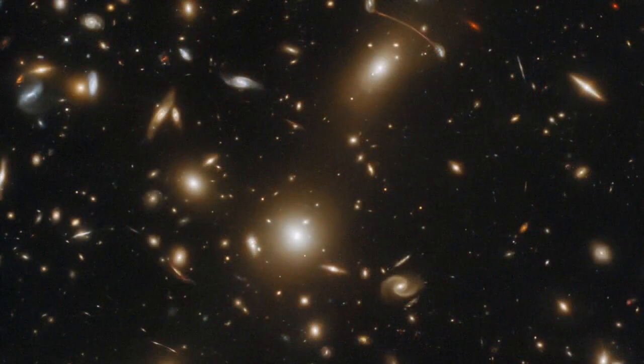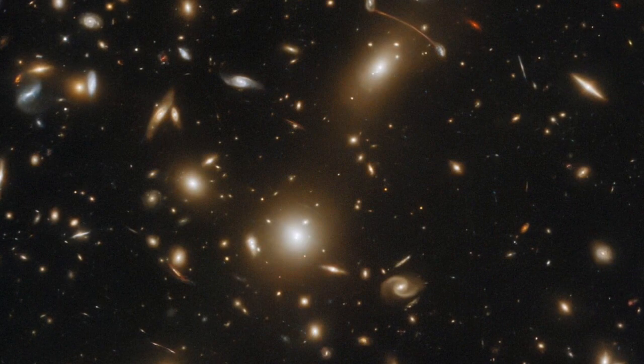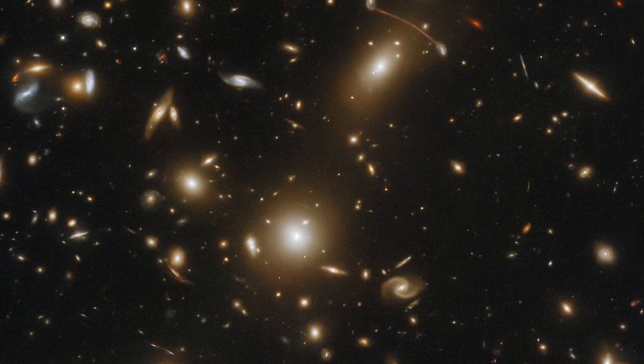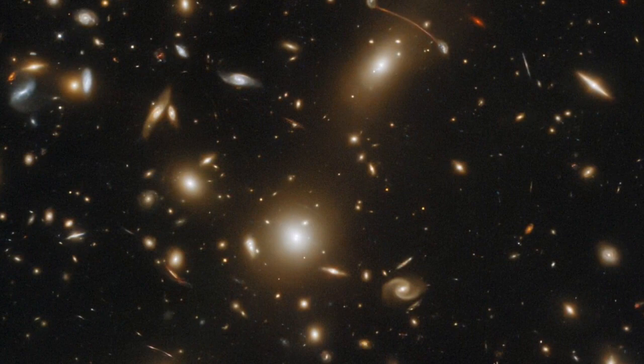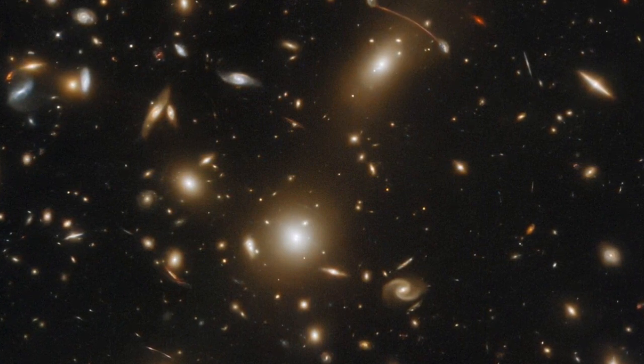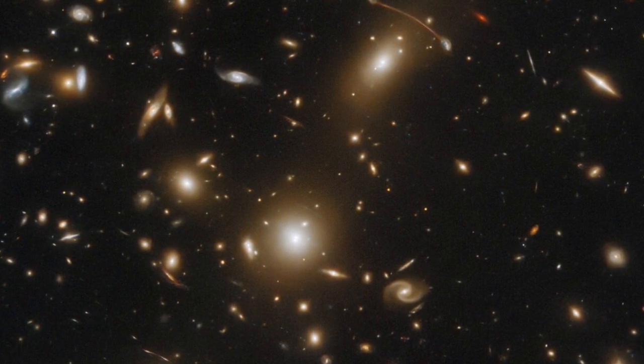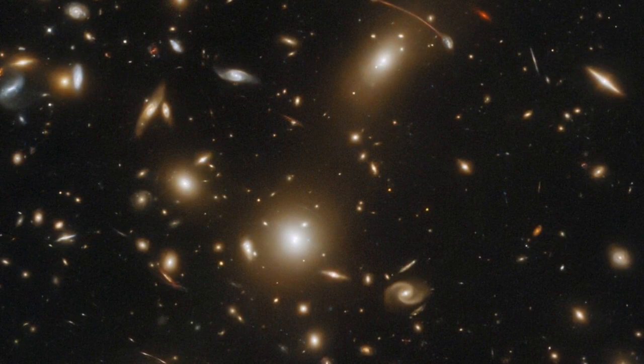But what if our universe is unique? Surely then we can ask what came before it. The first point to note is that the term 'before' assumes that there's some neat and tidy way to figure out the order of things in time. But there isn't. There's no standard clock by which events in the universe can be put into a clear, orderly sequence.